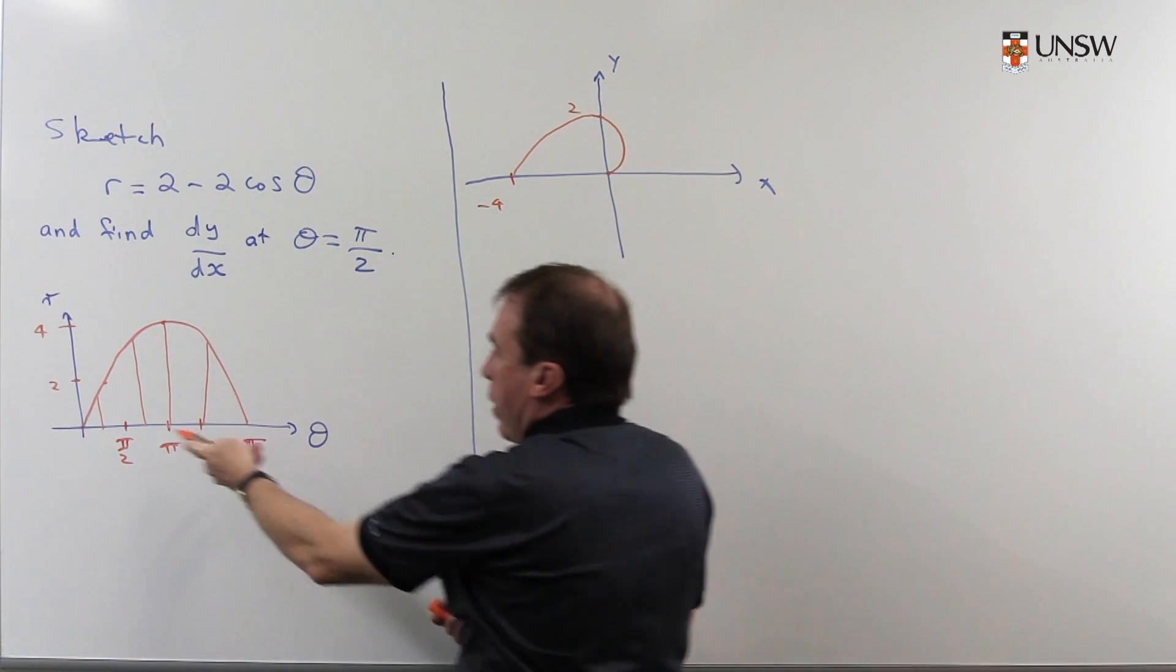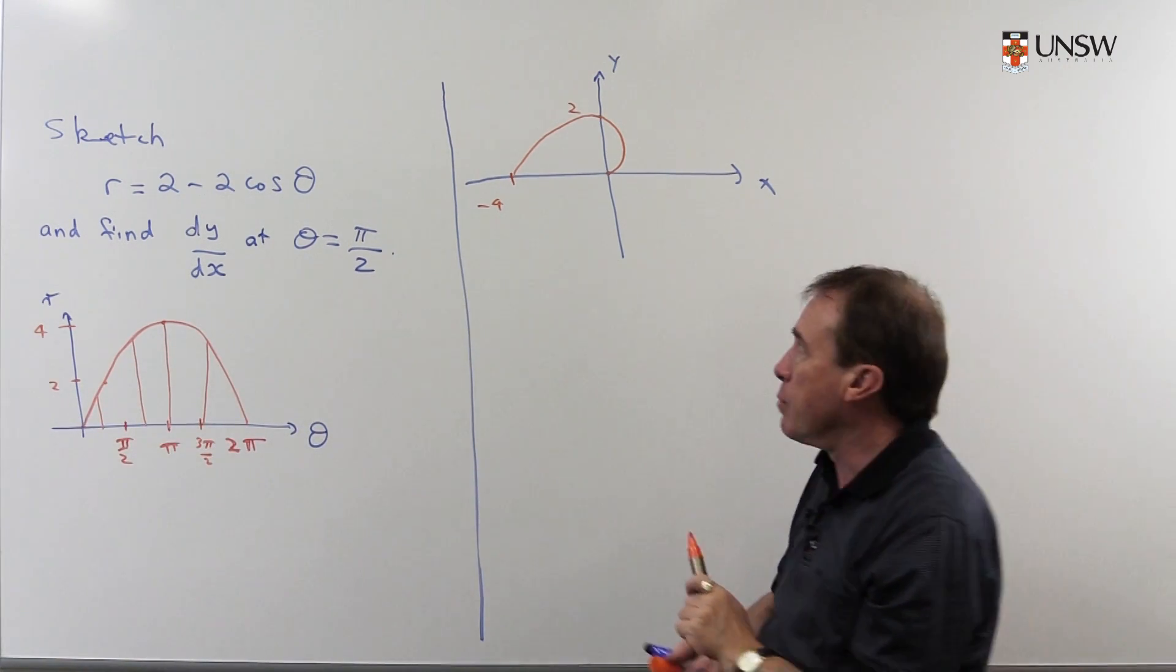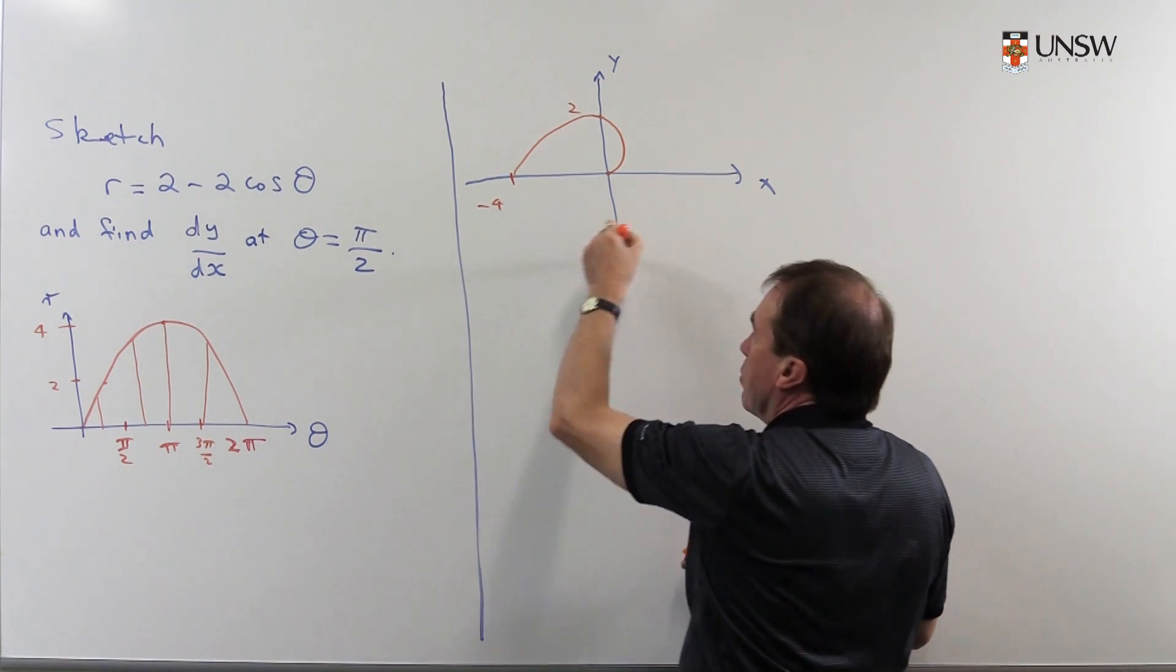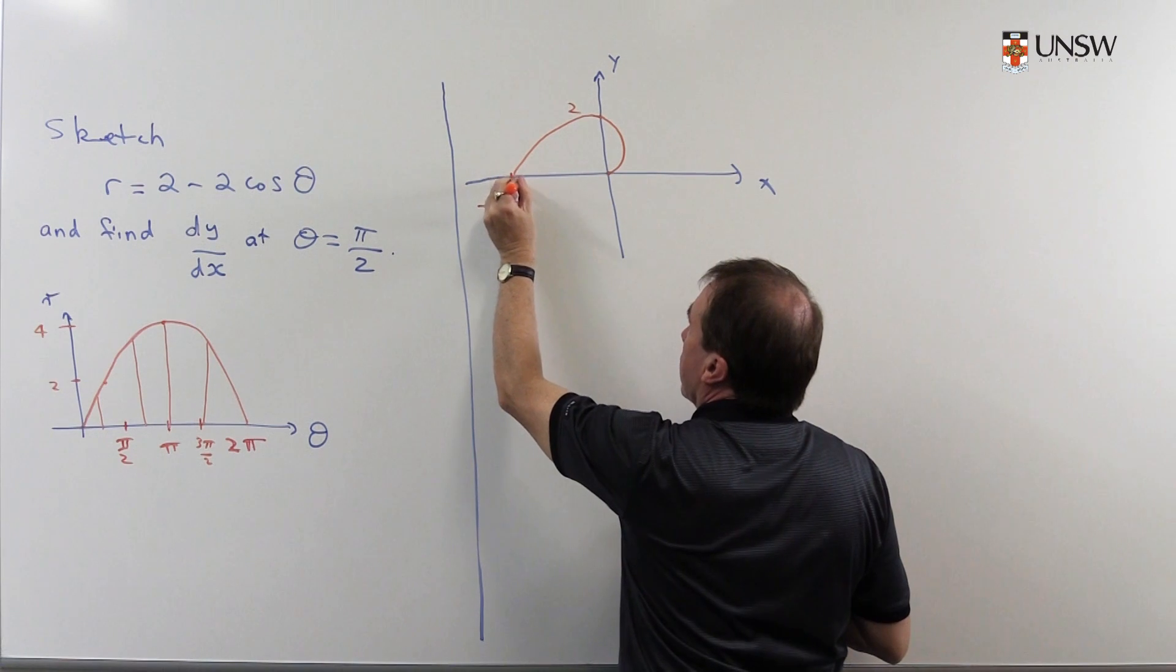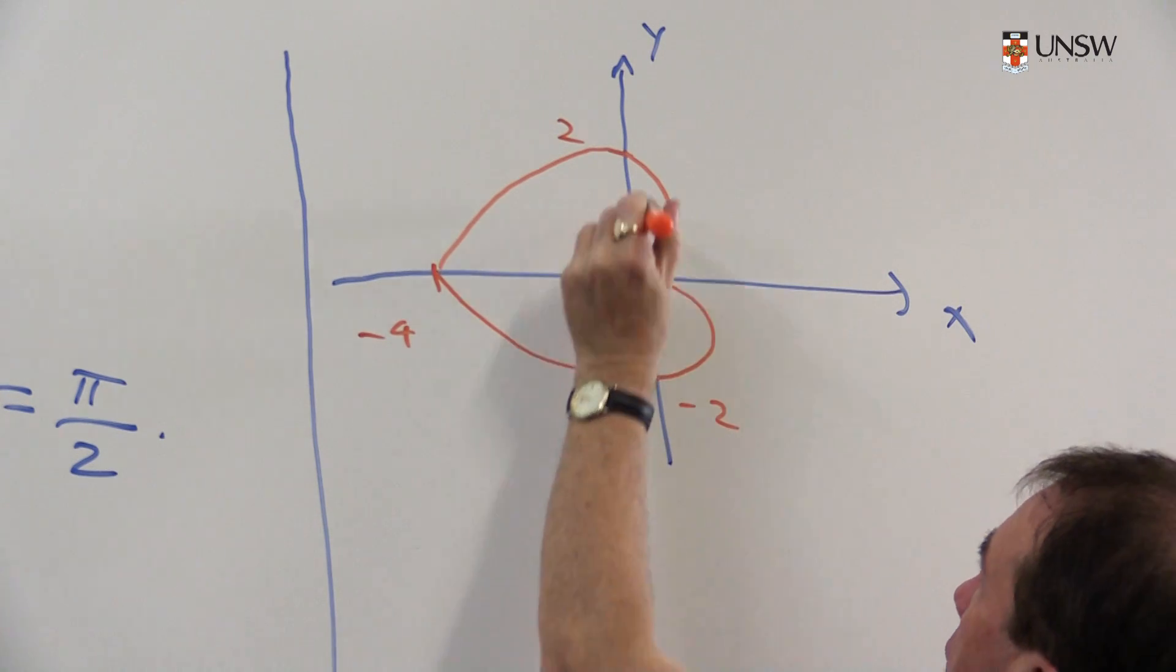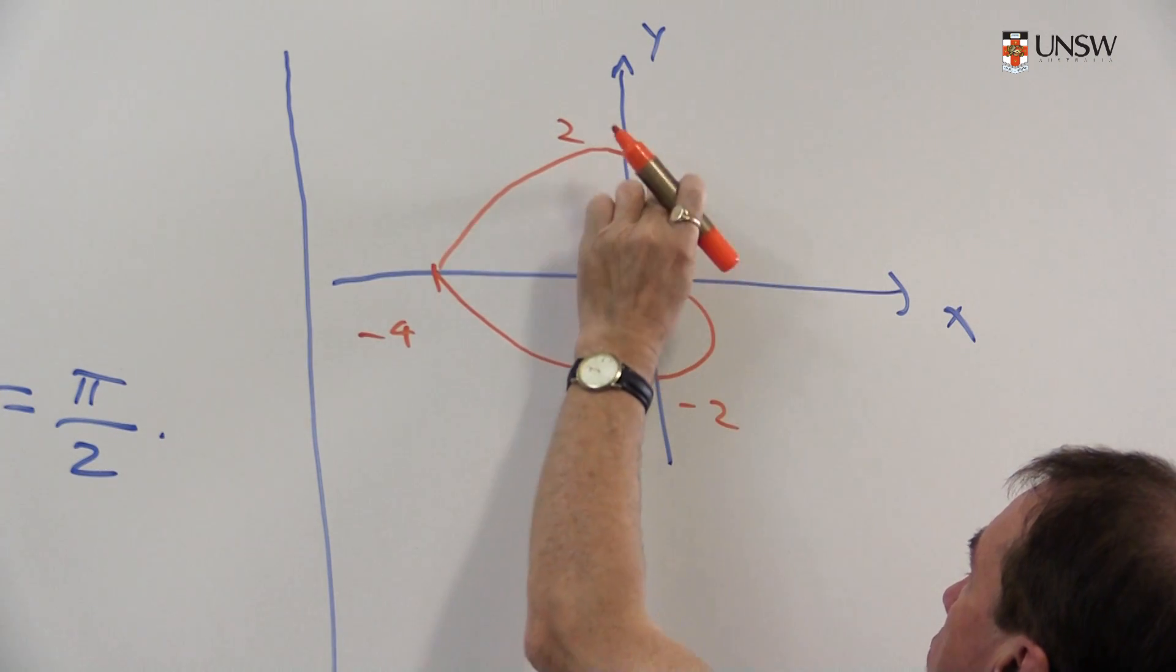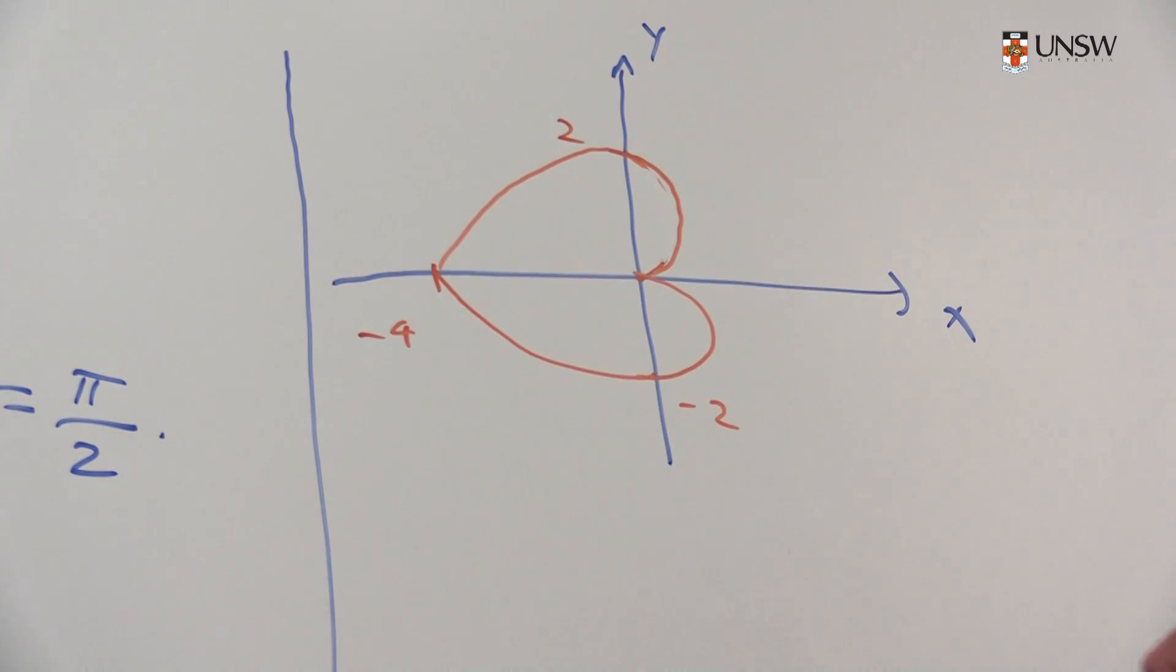Now I just look back at this and say, look, the whole thing is symmetric about π, so that means it's going to do exactly the same thing as I move around to 2π. By the symmetry it's going to come around here, it'll have to go through the point -2 there, and then come back into there. Try and make it a little bit smoother.